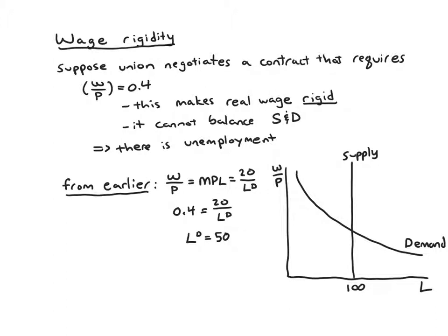Well, that's not good because we know the supply was 100. 100 people wanted to work. And we've drawn that in here over on the right. The supply is drawn in at 100. The demand curve is drawn like before. It's 20 over L. But we know the real wage has to be 0.4. And we calculated that the quantity of labor demanded at that real wage is only 50 workers. So we have this gap between the 50 people that are hired and the 100 people who want to work. The 50 who are left over are all unemployed. So this represents graphically structural unemployment.